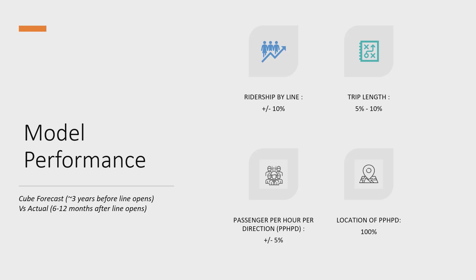In terms of model performance, these are the average variances we have observed from the CUBE model. We compare the CUBE forecast made around three years before the line opens with the actual numbers 6 to 12 months after the line opens when ridership stabilizes. The typical ridership variance is around 10%, trip length is around 5% to 10%, PPHPD — which is the AM peak loading along the network — is around 5%. The location of the peak load is also very important, and the AM assignment of the CUBE model is able to predict this very accurately.